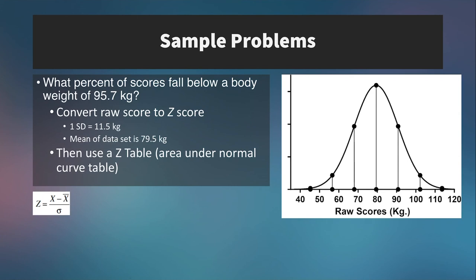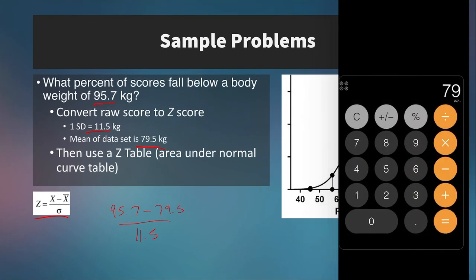For the first question, we want to know what percent of scores fall below a body weight of 95.7 kilograms. The first thing to do is convert this to a z-score. I have the standard deviation and the mean, as well as the z-score formula. Taking the score 95.7, subtracting the mean, and dividing by 11.5 gives us a z-score of 1.4.